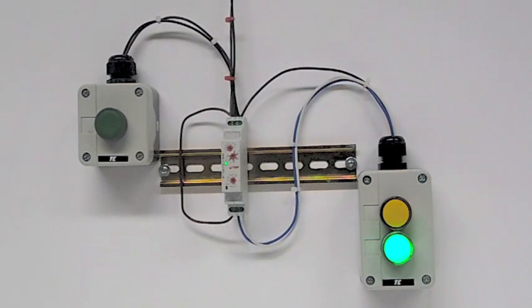Here we have the multifunction timer wired up. The supply voltage comes in the top on A1 and A2. The switch, which is S, is connected between A1 and the centre pin S.